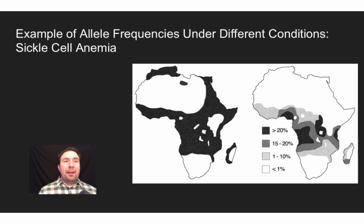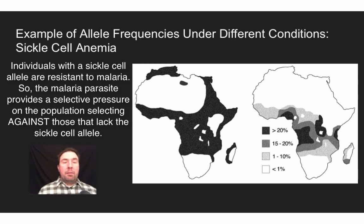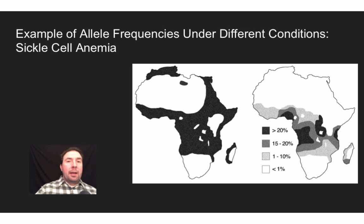Hopefully you came up with the idea that there must be some selective pressure on individuals in areas where malaria is present that actually encourages the sickle cell allele. In fact, individuals who have one allele for sickle cell disease — sickle cell trait — have a natural resistance to malaria. Looking back at Hardy-Weinberg, that strong selection explains why allele frequencies shift toward the sickle cell trait in those regions. Where there's no malaria, there's no selective pressure for it, and the disease actually selects against it.